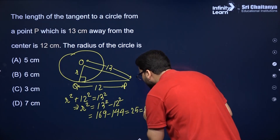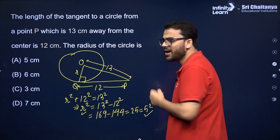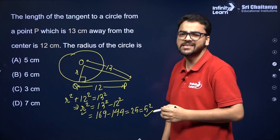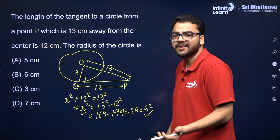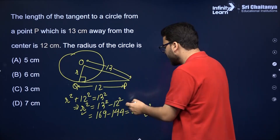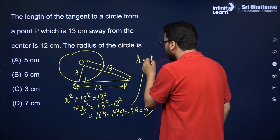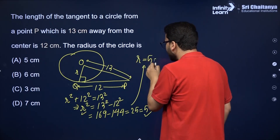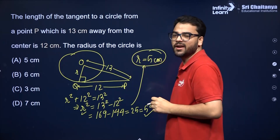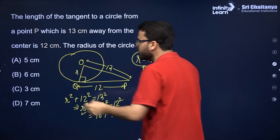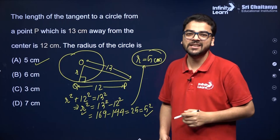Although this is a quadratic equation in R, we are talking about distance, so we will not take the negative value — we will neglect it. Therefore R equals 5 centimeters. The radius of the circle is 5 centimeters.